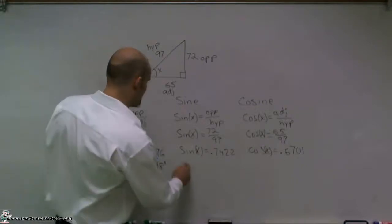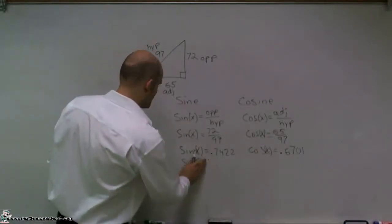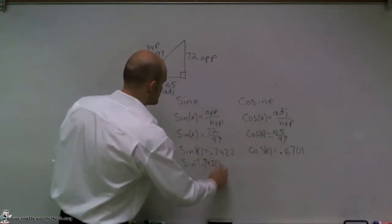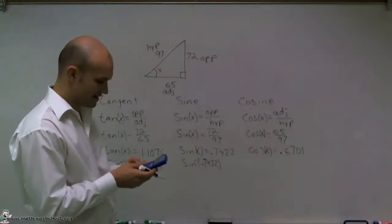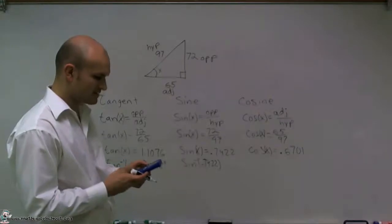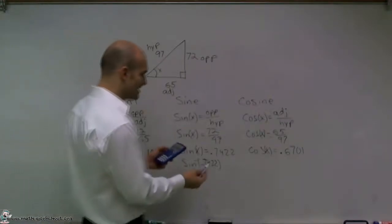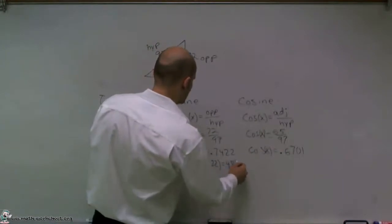When I do the inverse sine of 0.7422, so I'll do 72 divided by 97 and then take inverse sine of that answer, I get 47.9, which I'll round to 48 degrees.